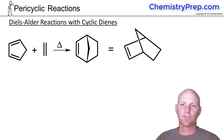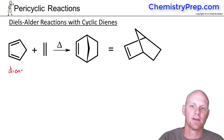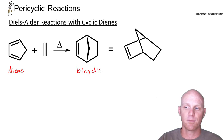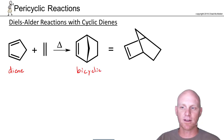Another thing we want to look at with Diels-Alder reactions is what happens when you start off with a cyclic diene. Well, what happens is you end up with a bicyclic product. And some things get a little bit funky with these bicyclic products.